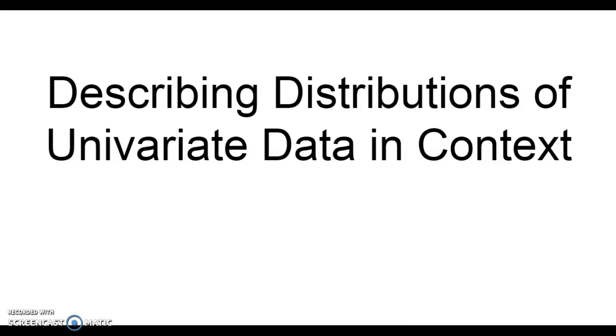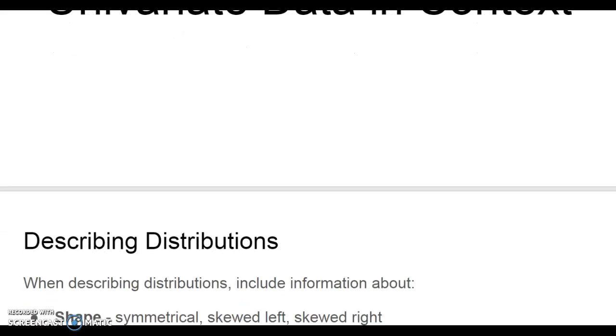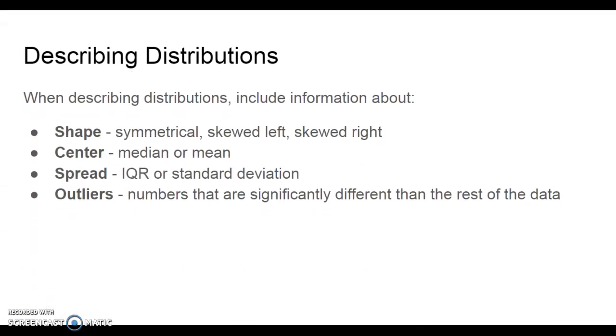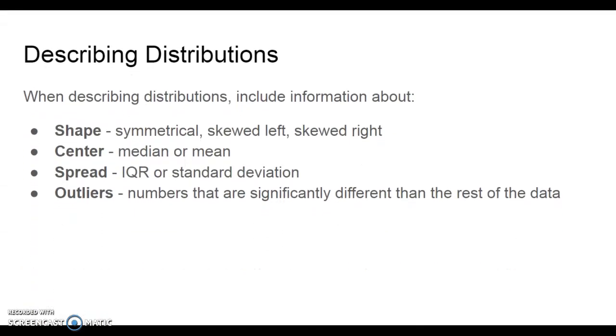Describing distributions of univariate data in context. When describing distributions of univariate data, there are four things that we want to make sure we address.